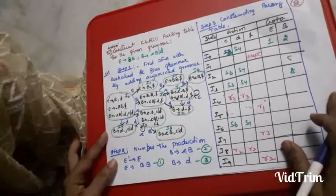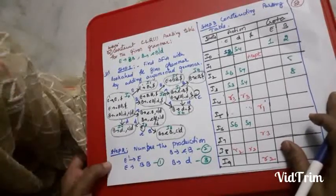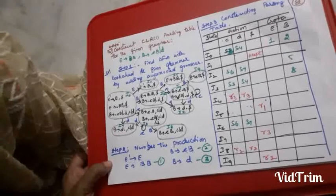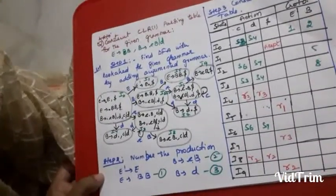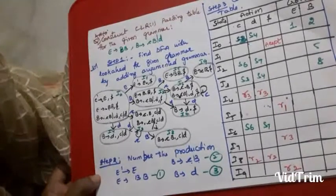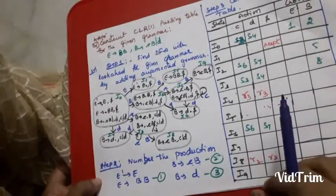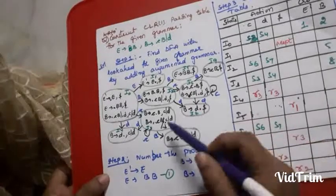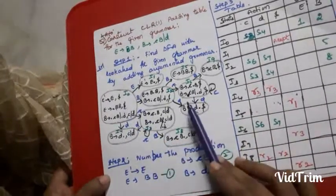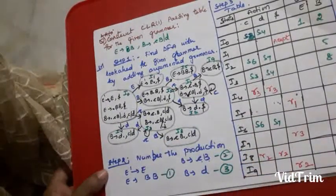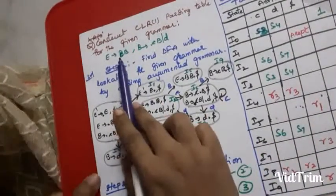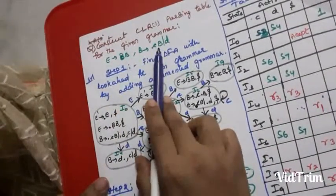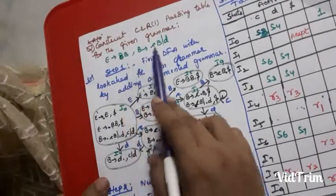Here we have a sample problem related to the construction of a CLR parsing table. We have been given a CLR grammar and we need to generate the DFA diagram and then construct a parsing table. To the given productions, we add an augmented grammar. Here E is the start symbol, so we add one more production that generates this start symbol.